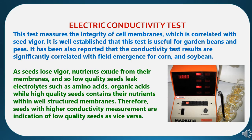Now, electric conductivity test. This test measures the integrity of cell membranes, which is correlated with seed vigor. It is well established that this test is useful for garden beans and peas. It has also been reported that conductivity test results are significantly correlated with field emergence for corn and soybean crops. As seeds lose vigor, nutrients exude from their membranes, and so low quality seeds leak electrolytes such as amino acids and organic acids, while high quality seeds contain their nutrients within well-structured membranes. Therefore, seeds with higher conductivity measurements are an indication of low quality seeds, and vice versa.